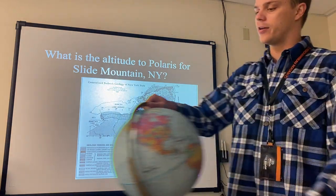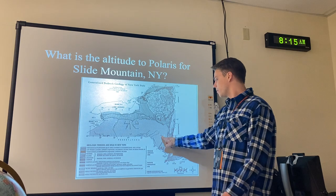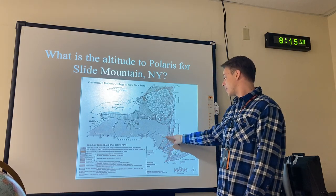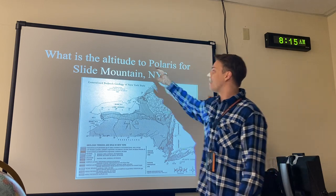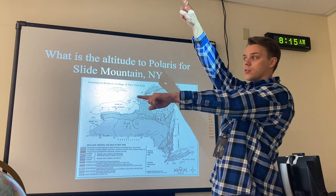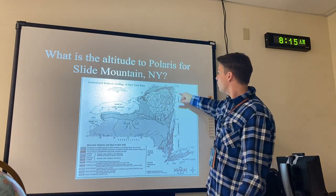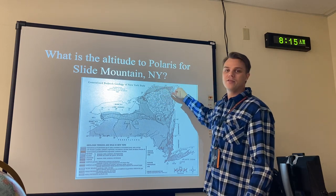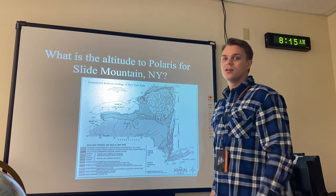What would the altitude to Polaris be for Slide Mountain? Looking at the map, Slide Mountain is at 42 degrees north, so the altitude to Polaris would be 42 degrees above the horizon. Further north, Messina is at 45 degrees north, so observers there would have to look a little higher — 45 degrees — to see Polaris.